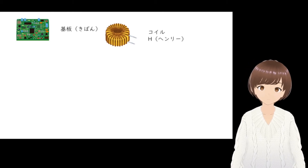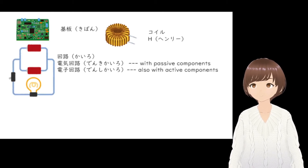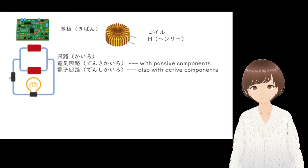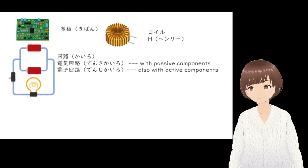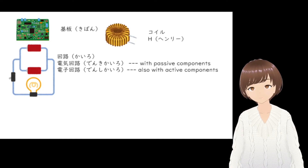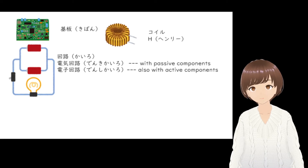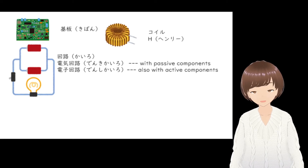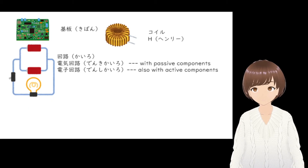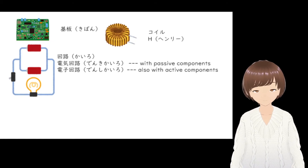Circuit board is kiban. In Japanese, the term for electrical network or circuit is kairo. To specify circuits that involve passive components, you can use denki kairo, where denki means electric. For circuits that involve active components such as transistors, diodes, or ICs, you can refer to them as denshi kairo. Denshi means electrons.